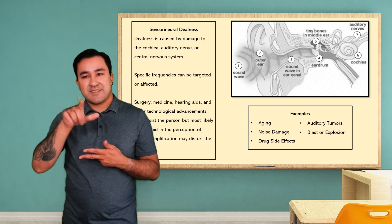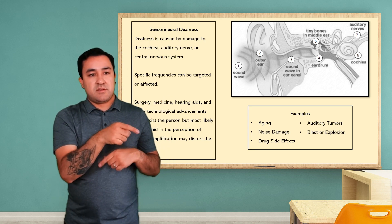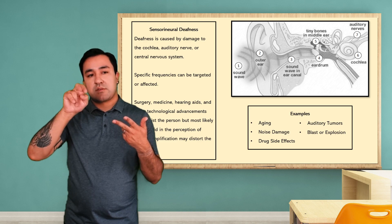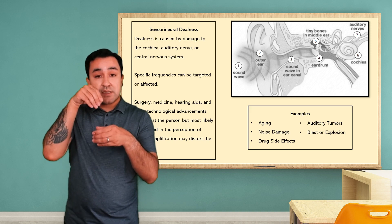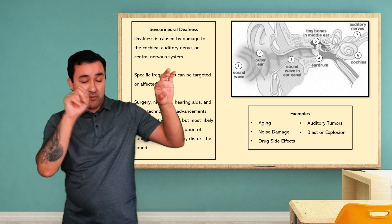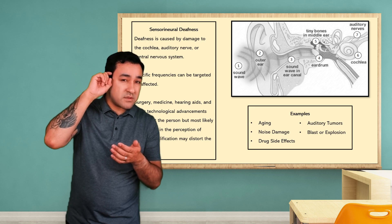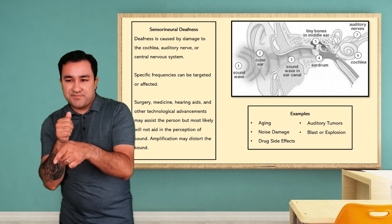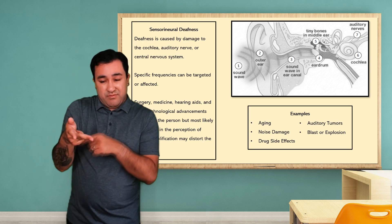Sensorineural deafness is when there is damage to the inner ear, such as the cochlea, auditory nerve, or even the central nervous system. For example, maybe the hair cells within the cochlea are damaged. Surgery, medicine, hearing aids, or other technological advancements may assist the person, but most likely will not aid the person's perception of sound. Amplification may even distort it. In some cases, the person can hear specific frequencies but not others.